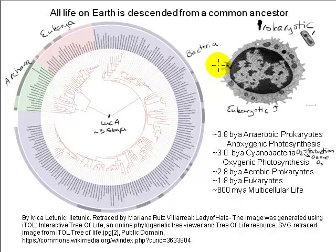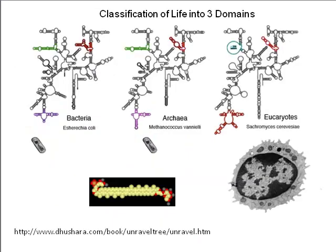The three-domain classification scheme is relatively recent. Before the 1990s, life was classified into two empires — prokaryia and eukaryia — under which came the five kingdoms: bacteria, fungi, protists, plants, and animals. Archaea were thought to be just weird bacteria — extremophiles that lived and thrived in harsh environments with extreme temperatures, acidic pH, or high salinity, which is where they were first identified.